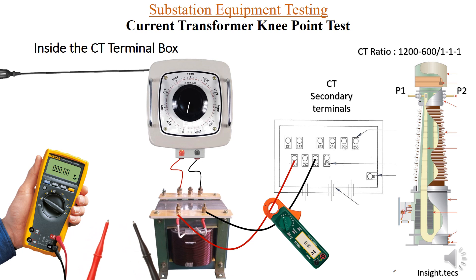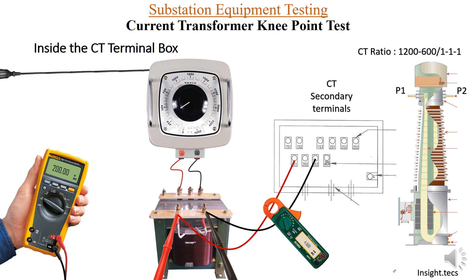Starting the test: at 100 volts, the multimeter reads 100 V and the excitation current is 2.5 milliamperes. At 200 volts, the ammeter shows 4.5 milliamperes. At 300 volts, the ammeter shows 5.7 milliamperes. You can similarly perform this test up to 950 volts, which is the knee point voltage, and also take a reading up to 10% higher voltage.